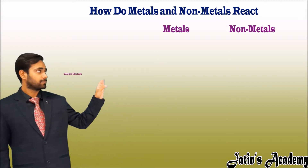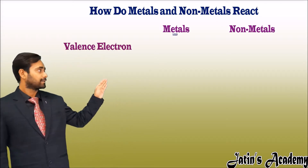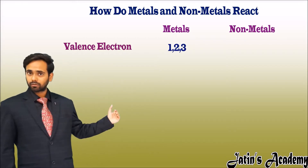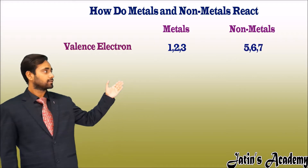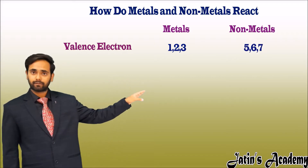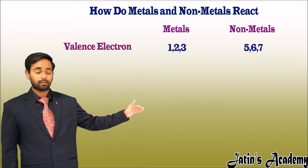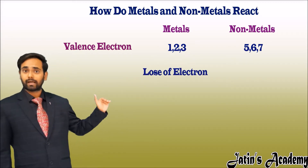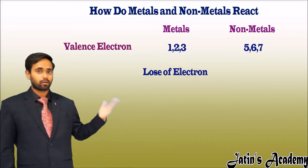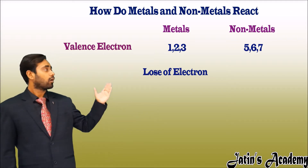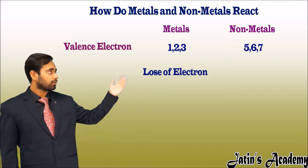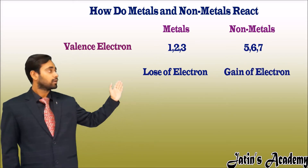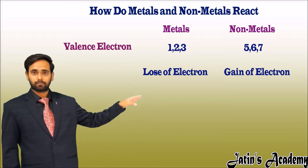According to the valency point of view, metals have 1, 2, or 3 valence electrons in their outermost shell, and nonmetals have 5, 6, or 7 electrons in their outermost shell. It means metals have to lose electrons in order to complete their octet or duplet. On the other side, nonmetals have to gain the same electrons in order to complete their octet or duplet.